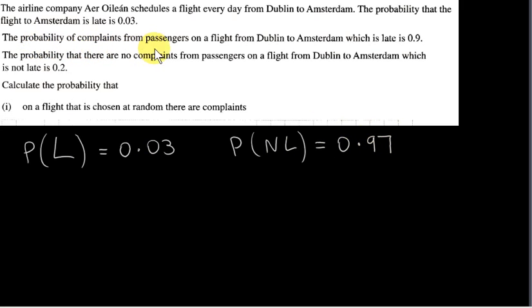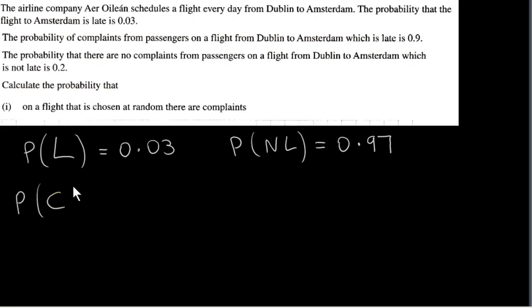The probability of complaints from passengers on a flight from Dublin to Amsterdam which is late is 0.9. I am going to let the letter C be the event that there are complaints on a flight from Dublin to Amsterdam. We are given that the probability that there are complaints on a flight from Dublin to Amsterdam, given that the flight is late, is 0.9.